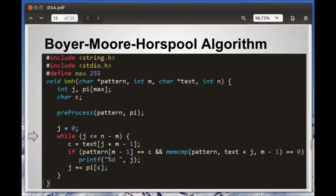We start to go through the text with j = 0. We run while j is smaller than the size of the text minus the size of the pattern. C is our current character. If the current character matches the rightmost character in the pattern, and the whole pattern matches the corresponding substring of the text, then we print the current position. Afterwards, we shift the pattern by π(c).